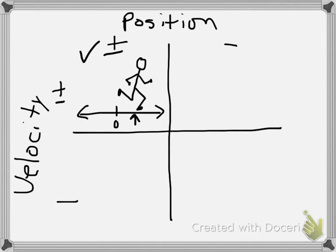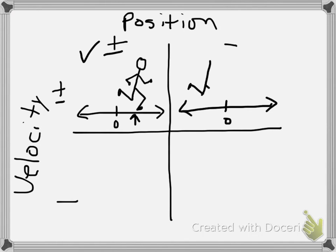What would it look like if he was in a negative position and positive velocity? Negative position just means he's on the opposite side of zero — over here to the left. But he still has a positive velocity, meaning he's still traveling in the same direction as in the first quadrant. He's just on the opposite side of zero — still running to the right, but now further to the left of the origin or starting position.